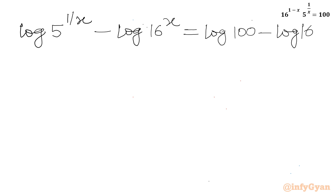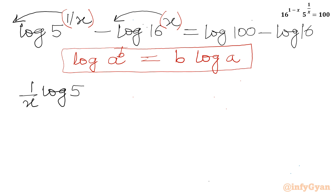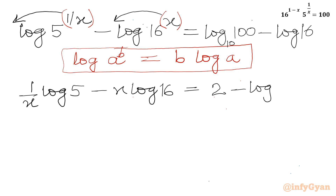Now I will use the property log(a power b) equals b times log a. Taking (1 over x) and x as multipliers respectively, I can write: (1 over x) times log 5 minus x times log 16 equal to log 100 base 10, which is 2, minus log 16.